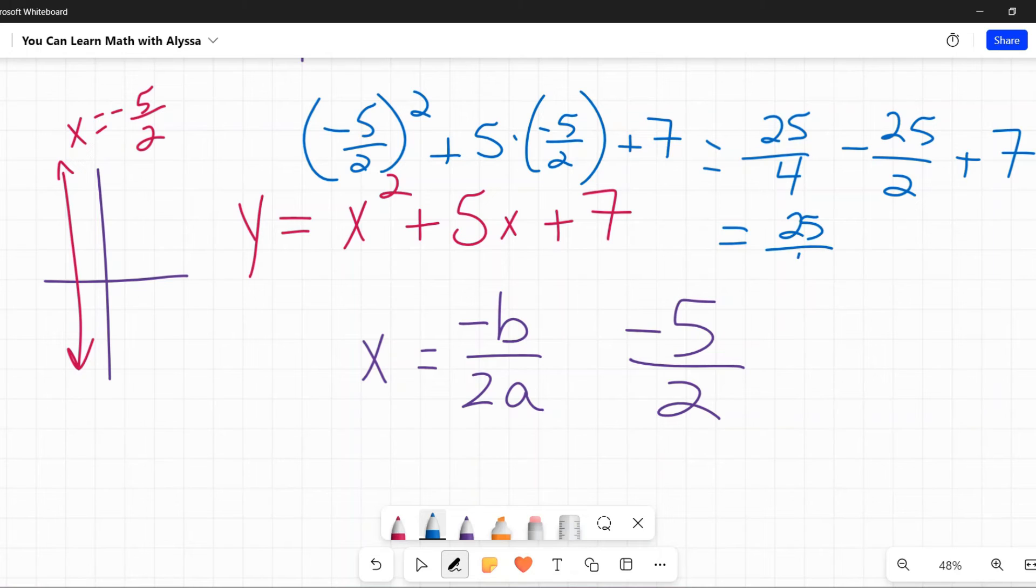Negative 5 halves squared is 25 fourths. 5 times negative 5 halves is negative 25 halves. And then I just have that plus 7. So 25 fourths minus 50 fourths plus 7. 25 fourths minus 50 fourths is negative 25 fourths plus 7. Negative 25 fourths is negative 6 and 1 fourths plus 7 equals 3 fourths. And there is my Y value.